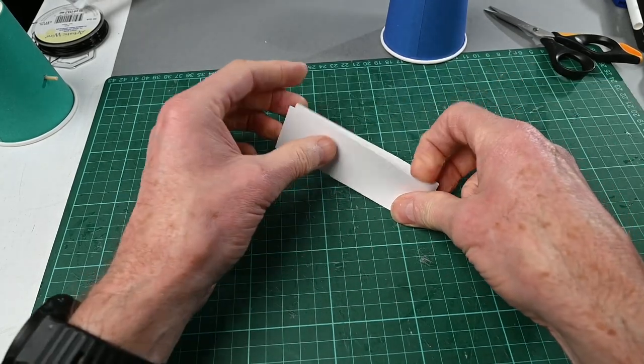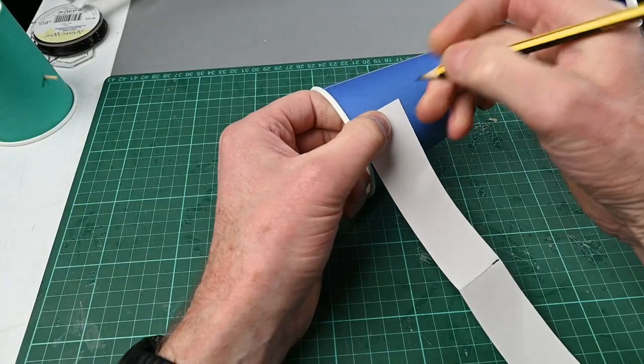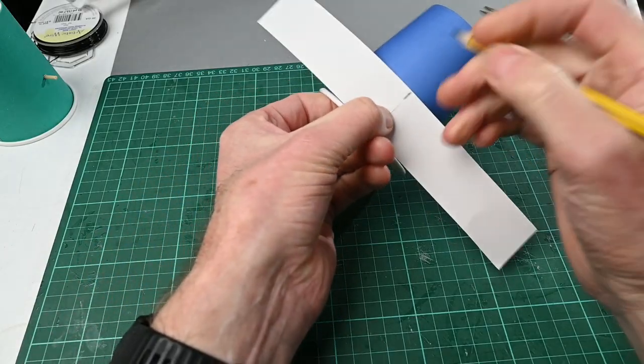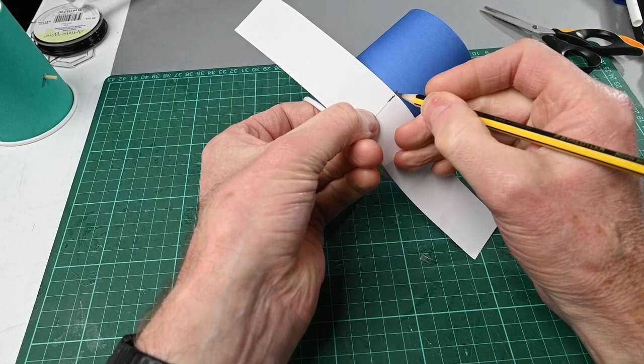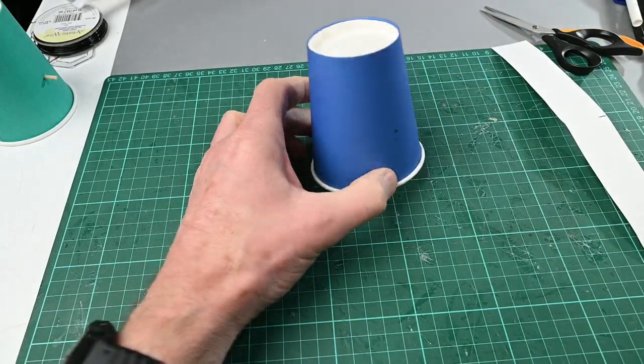Fold it in half to find the center point and lay it out. Put a pencil mark on where the center point is, then mark off one side there, roll it round, mark off the other side. I've now got two marks that are exactly opposite each other on the cup, ready for my skewer to go in.